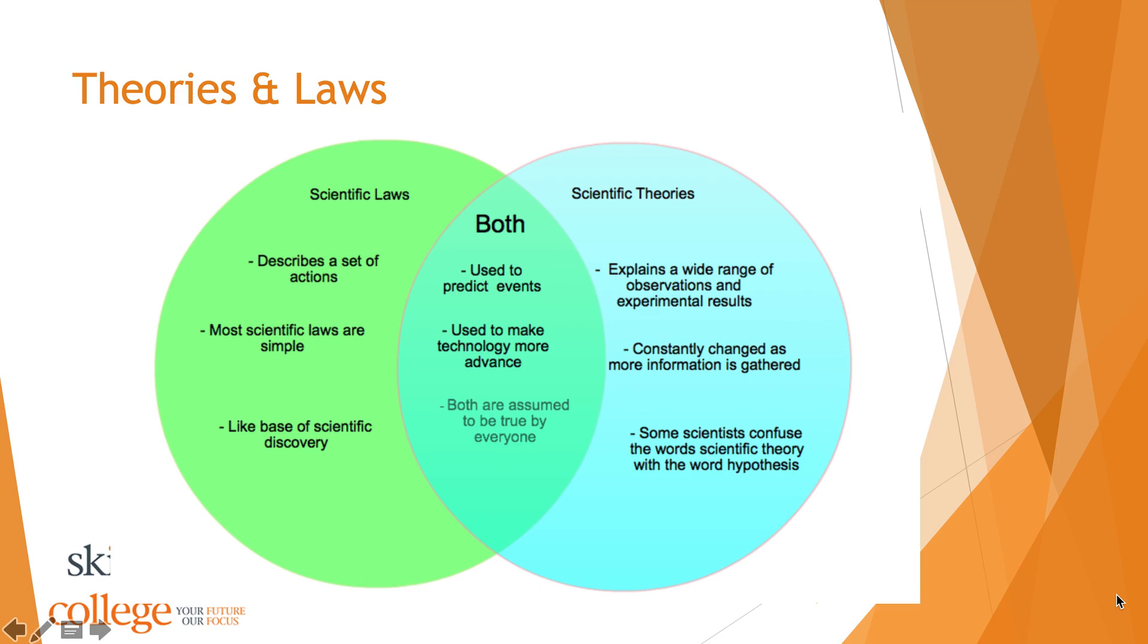You can see here, this is what we call a Venn diagram, and on the left-hand side we have scientific laws, and on the right-hand side scientific theories. What is distinct about a scientific law is it describes a set of actions. Most scientific laws are simple and the base of scientific discovery. They're used to predict events, used to make technology more advanced, and both are assumed to be true by everyone. A scientific theory explains a wide range of observations and experimental results. A scientific theory constantly changes as more information is gathered. The volume of evidence that is presented helps make that theory more distilled over time, so clearer.